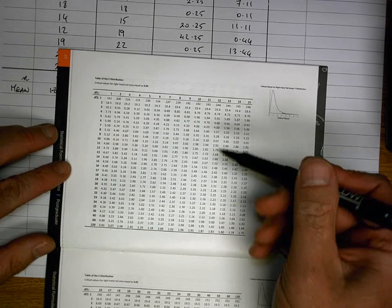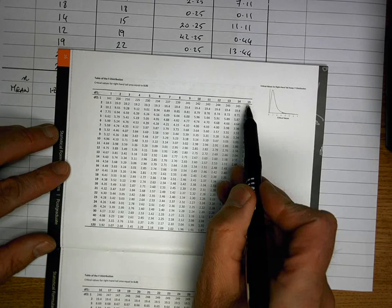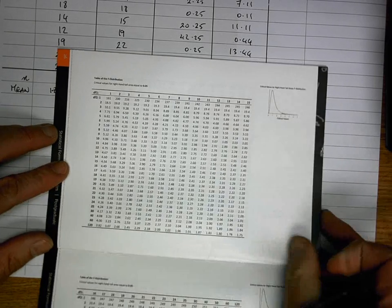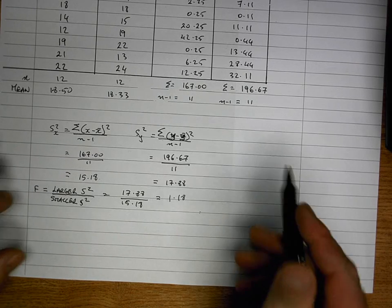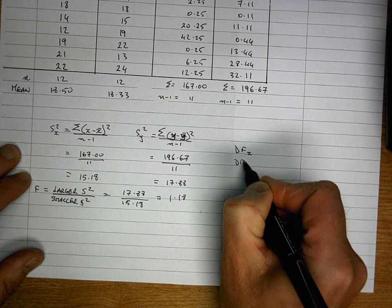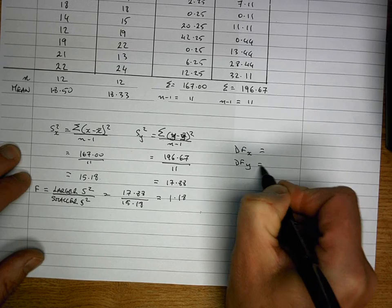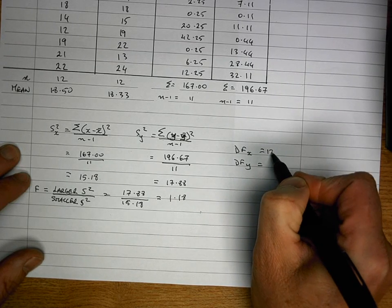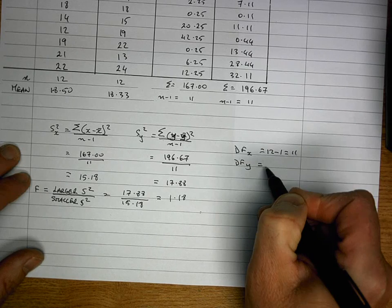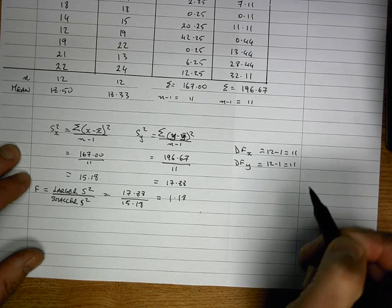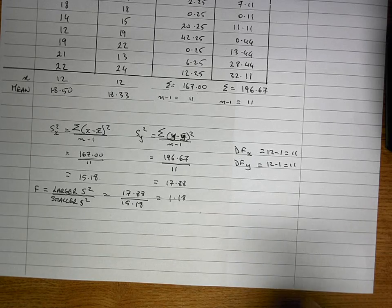And what I do is I need degrees of freedom across the top to determine the column. And degrees of freedom down along the left to determine the row. So back in my notes over here I need to determine the degrees of freedom for the X group. And the degrees of freedom for the Y group. And these are simply, degrees of freedom is always N minus 1. So this is going to be 12 minus 1 which is equal to 11. And the Y group is also 12 minus 1 equal to 11. So my degrees of freedom are 11 in both cases.